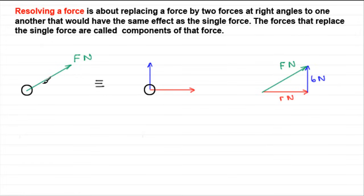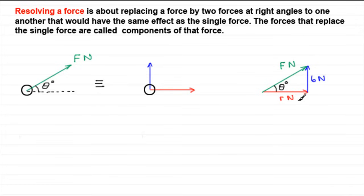Now, let's say that this force acts at an angle to the horizontal. Mark a horizontal in here, and let's say this angle is theta degrees. That means this angle in the triangle would also be theta degrees. By using trigonometry, we can work out — knowing F and knowing this angle — what the two components are.